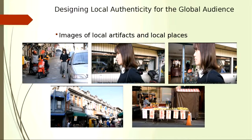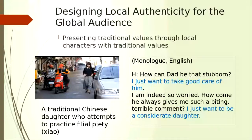From the slides, we can see the student has local artifacts and local places — the man riding a scooter without a helmet, how the local store looks, how the Buddhist court looks, the local landmark, and the local fruit stands. They also create local characters who evoke traditional values. The daughter character is very traditional in Chinese culture, practicing what we call 'filial piety,' or Xiao in Chinese — a Confucian philosophy meaning you need to respect your parents, follow their orders, take care of them when they are old, and live with them.